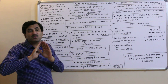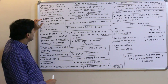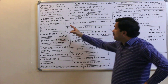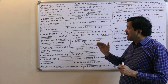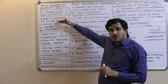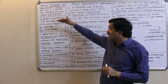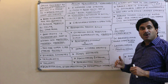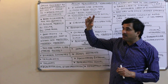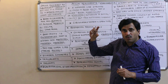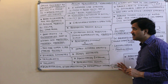The word Stomochordata comes from stomocode. Now, their body is cylindrical and divided into three parts: the anterior part is called the proboscis, the middle part is called the collar, and the posterior part is the long trunk.